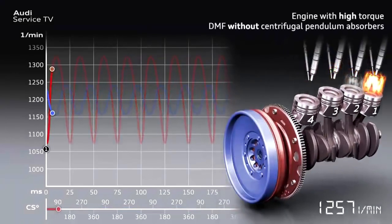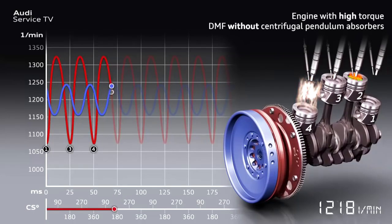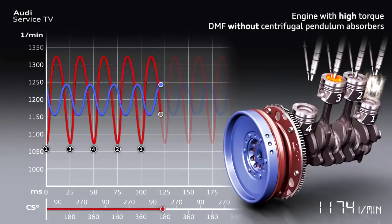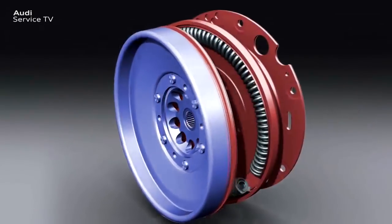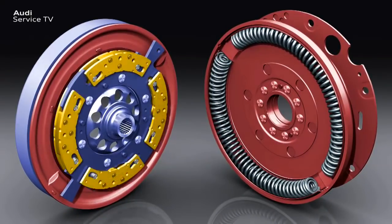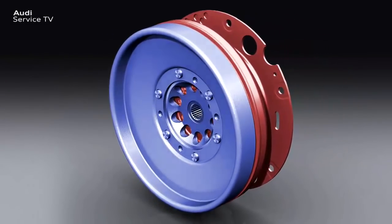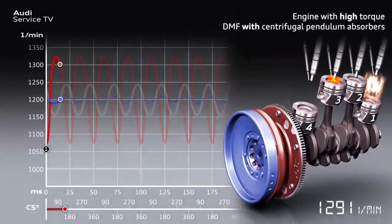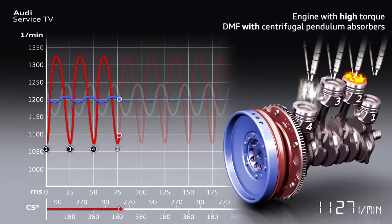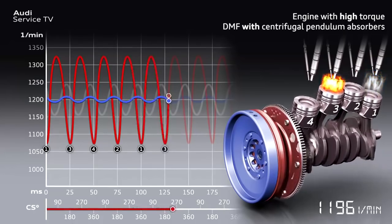These high torque engines place very high demands on torsional vibration damping. These engine vibrations can no longer be satisfactorily eliminated using conventional dual mass flywheels. An innovation to efficiently eliminate engine torsional vibrations is the dual mass flywheel with centrifugal pendulum absorbers. In contrast with previous dual mass flywheels, it is even better at reducing engine torsional vibrations, is suited for the torque characteristic and torsional vibration behavior of modern engines, and reduces the lower limit of the usable speed range of the engine.